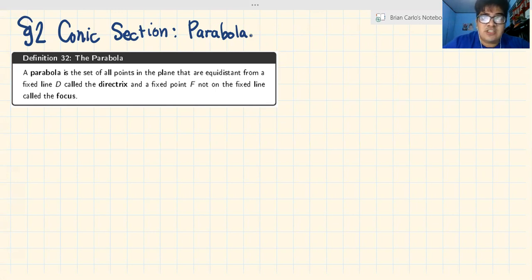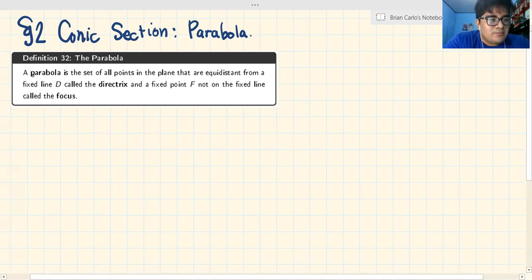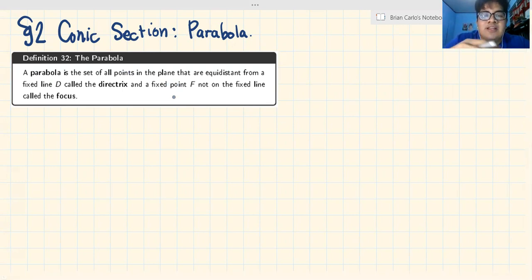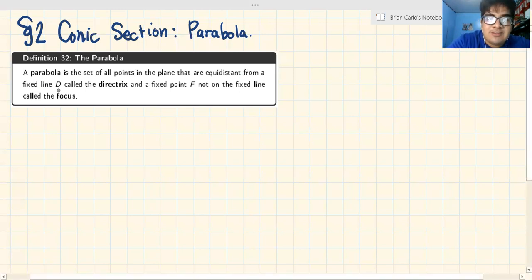Now let's define what a parabola is, shall we? A parabola is the set of all points in a plane that are equidistant. It means that it is equal distance from a fixed line D called the directrix, and a fixed point F not on the fixed line called the focus.